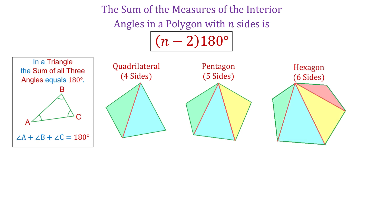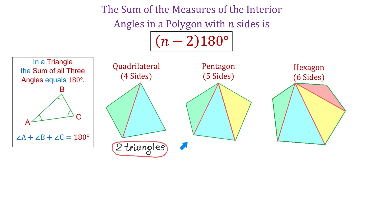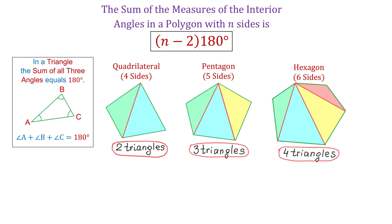Notice that in each polygon the number of triangles formed is two less than the number of sides. In a quadrilateral we have two triangles, which is two less than four. In a pentagon we have three triangles, which is two less than five. And in a hexagon we have four triangles, which is two less than six.